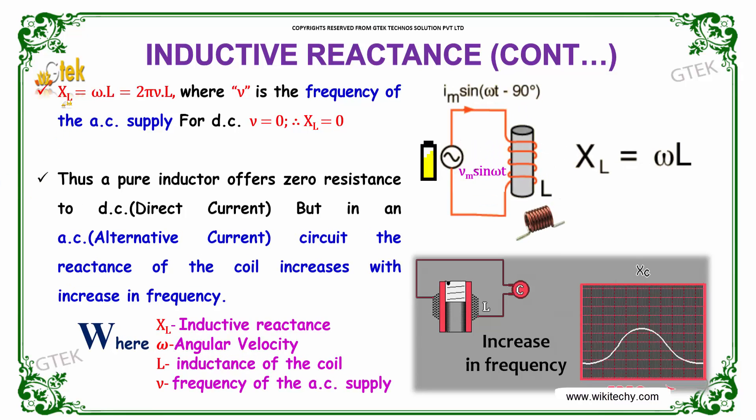As you know, we got the equation as XL equals omega L, that is nothing but omega L equals 2π nu times L. If the frequency nu of the AC supply is 0 for DC, automatically the XL value becomes 0.